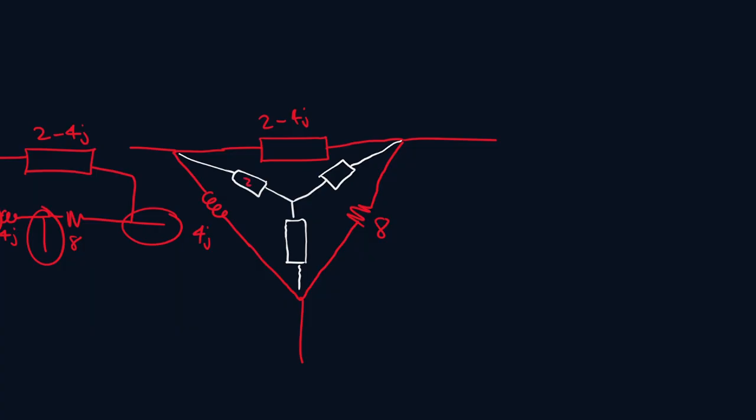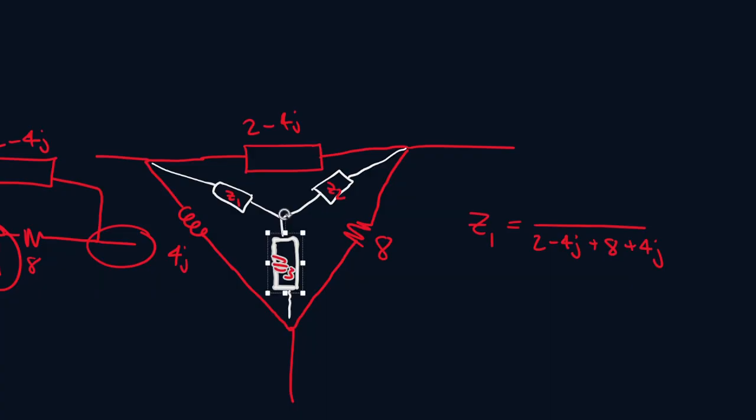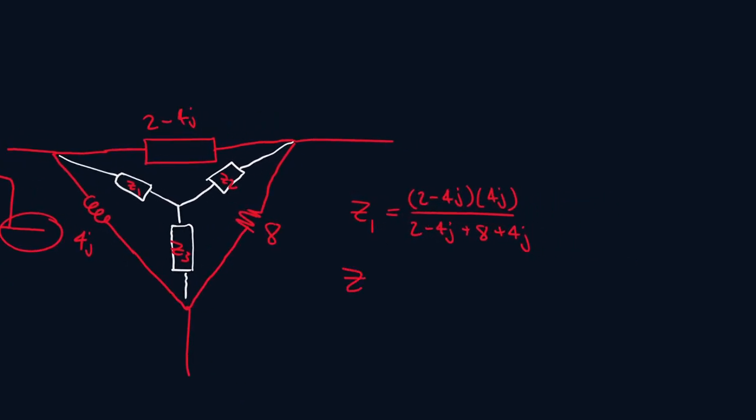Let's call this Z1, Z2, and then Z3. So let's solve for Z1. The bottom part, we just add up all of our impedance values. Now the top part is the tricky part. We're going to start here and see what impedance value is directly below us, and we see there's an 8 ohm impedance value directly below it. That means we're going to ignore that. For the top part we'll just do 2 minus 4j times 4j. Putting all of this into your calculator.